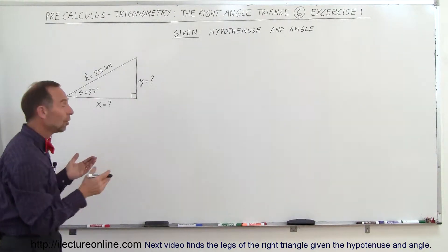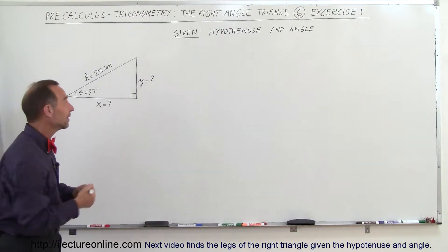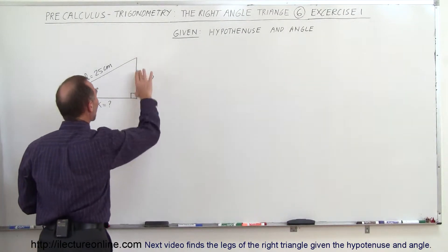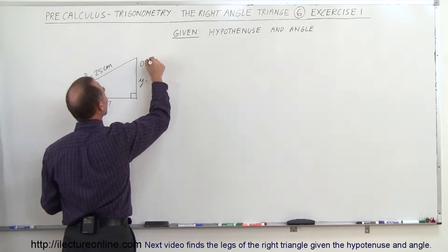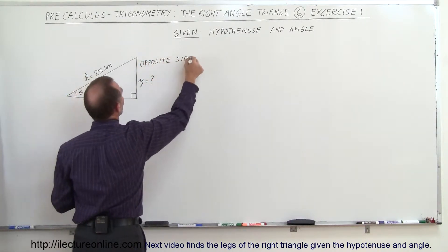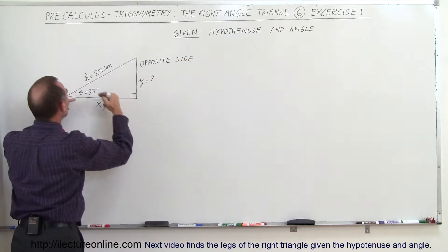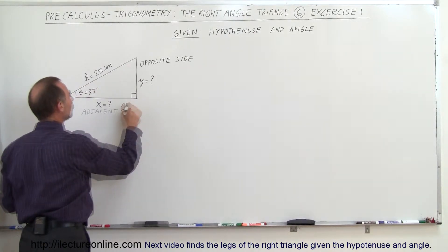What I recommend you always do is recognize what the two unknown sides are. In this case, this is known as the opposite side because it's opposite to the angle. So I'll label this as the opposite side. And this here is the adjacent side because it's adjacent to the angle.